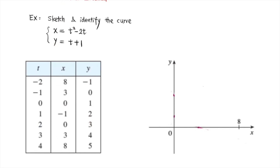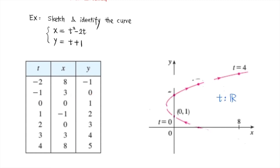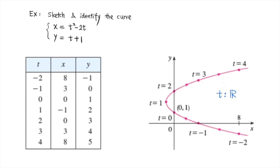Plotting the points: (8, -1) corresponds to t = -2, (3, 0) to t = -1, and so on. We draw the curve through these points. Since we didn't put any restriction on t, we assume t is all real numbers. The parametric curve moves in the direction of increasing t.